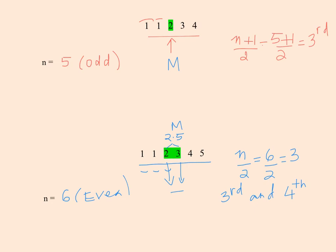The important thing to remember is that if there are an odd number of numbers, then there is one middle number. And if there are an even number of numbers, then there are two middle numbers.